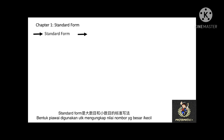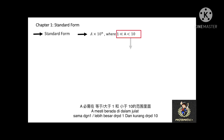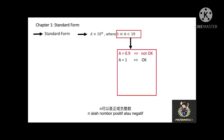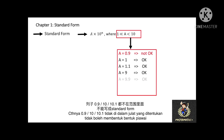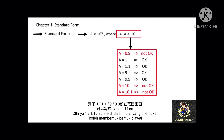The next topic of this chapter is standard form. Standard form is used to express a very large number or a very small number. Standard form is written as a × 10 to the power of n, where a must be greater than or equal to 1 and less than 10, and the index n can be a positive or negative integer. When a equals 0.9, 10, or 10.1, it is outside the valid range and therefore cannot be standard form. When a equals 1, 1.1, 9, or 9.9, it is within the range and can be standard form.